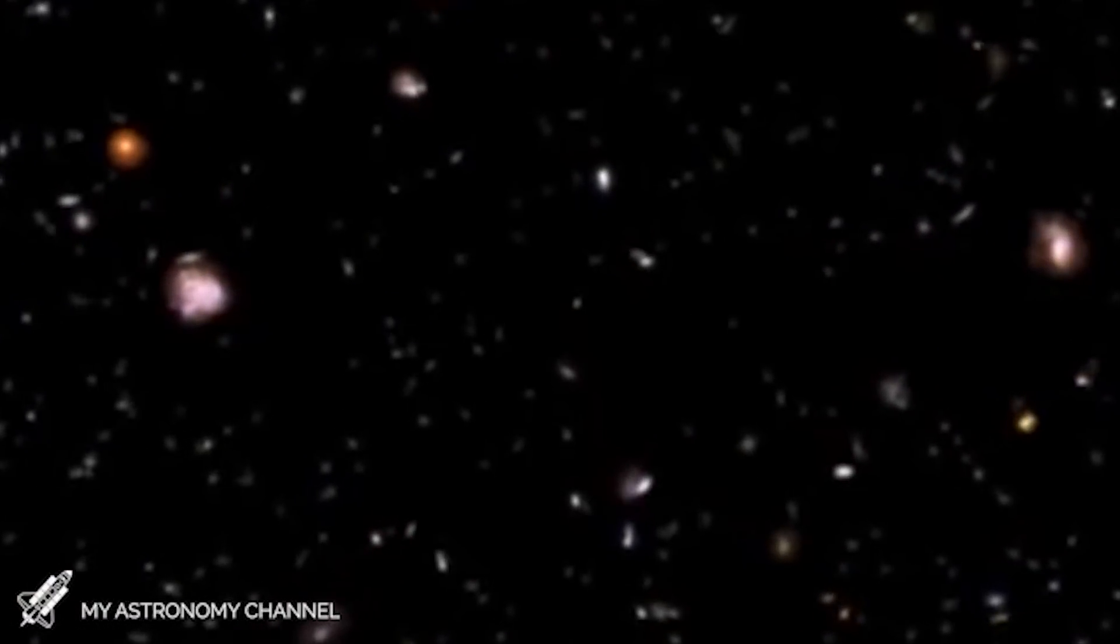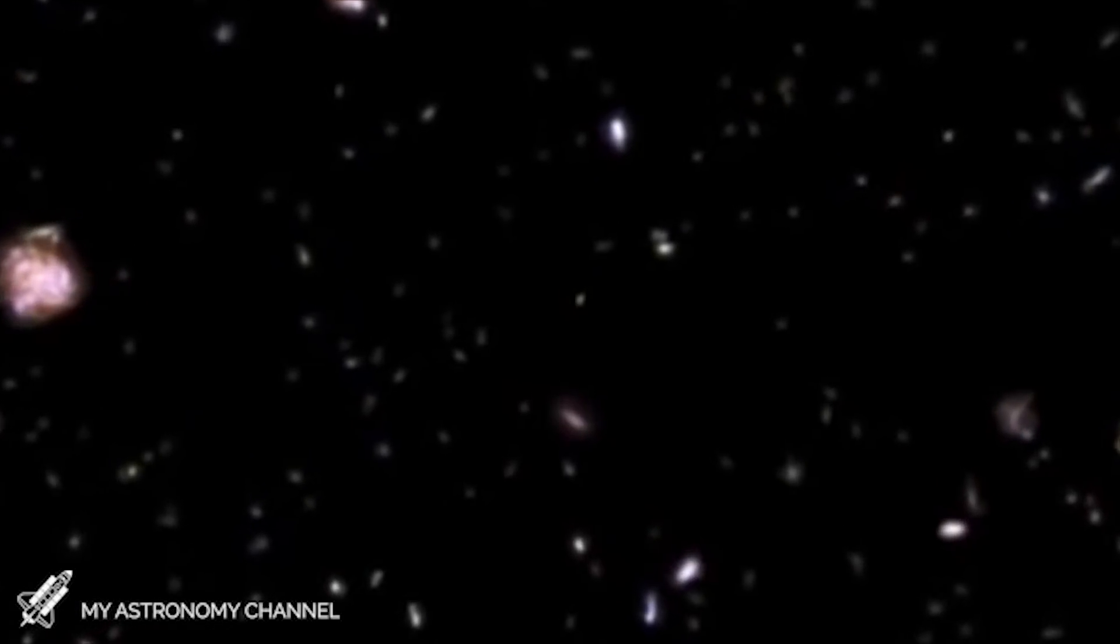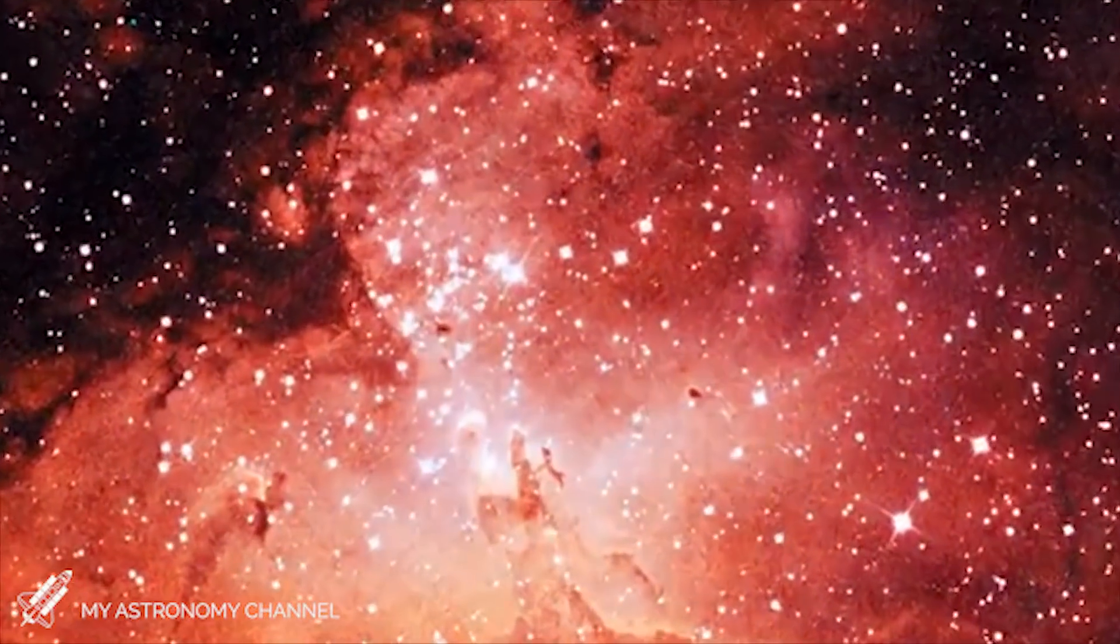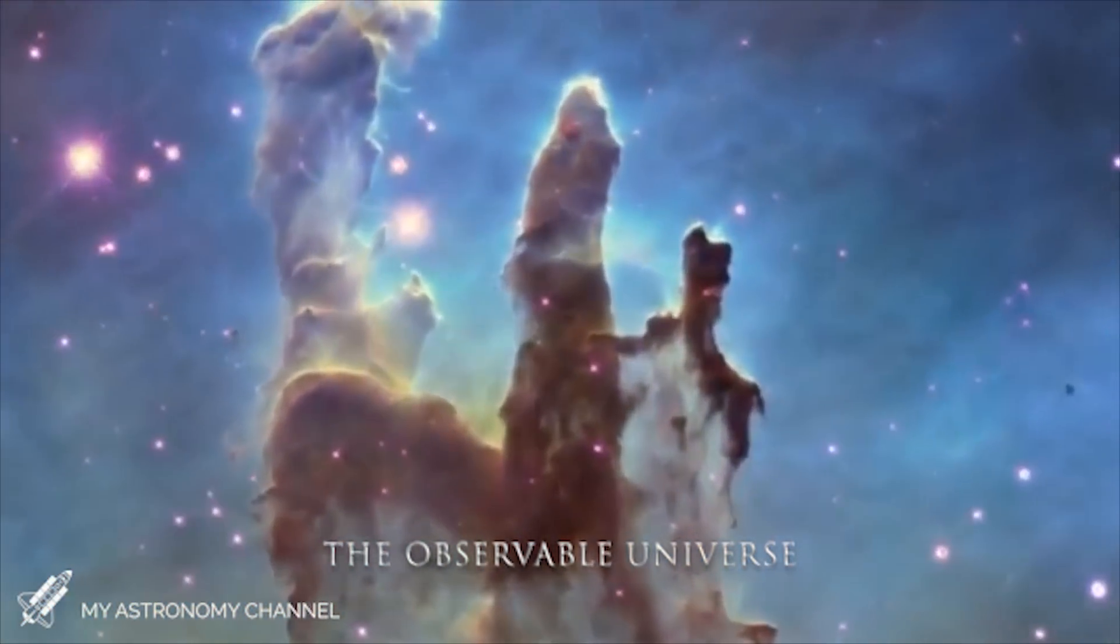The universe is about 13.8 billion years old, so any light we see has to be traveling for 13.8 billion years or less. We call this the observable universe. However, the distance to the edge of the observable universe is about 46 billion light years because the universe is expanding all of the time.